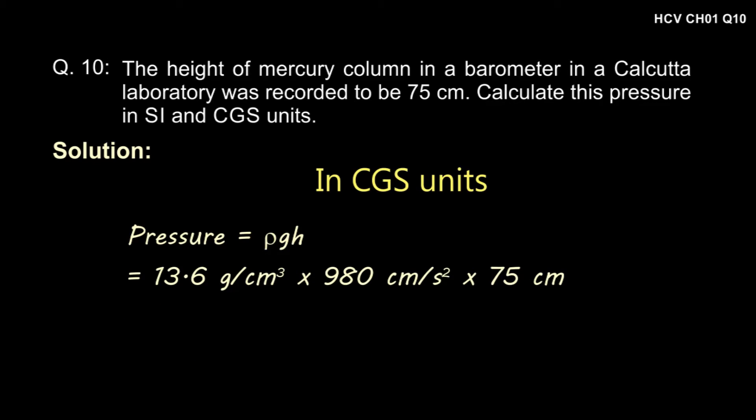In CGS units, density of mercury is 13.6 gram per centimeter cube and acceleration due to gravity is 980 centimeter per second square, and height is 75 centimeter.